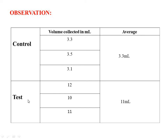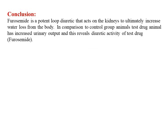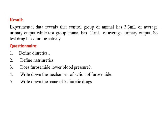The data reveals that the control group animals have an average urinary output of 3.3 ml, while the test group receiving furosemide shows a urinary volume of up to 11 ml. We can conclude that the test drug is responsible for increasing the urinary output, and therefore the test drug furosemide has diuretic activity. This is our result and conclusion.